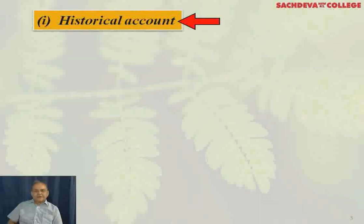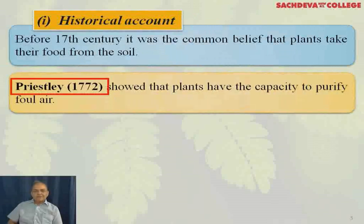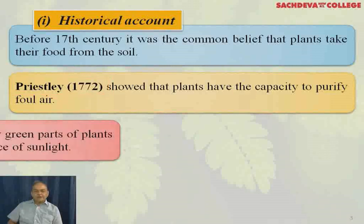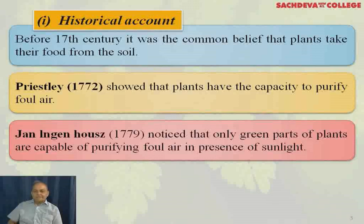Historical account: Before the 17th century, it was the common belief that plants take their food from the soil. Priestley, in 1772, showed that plants have the capacity to purify foul air. Jean Ingenhousz, in 1779, noticed that only the green parts of plants are capable of purifying foul air in the presence of sunlight, thus realizing the importance of sunlight.